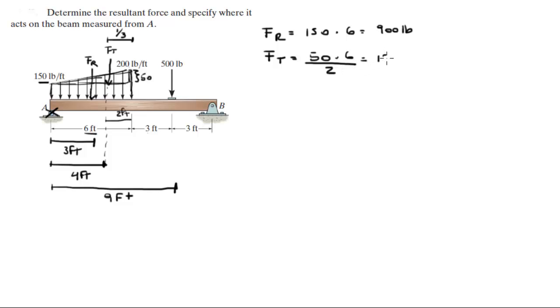So 50 times six is 300, divided by two is 150 pounds. Now we got the two forces, and this force is 500, so let's call it F3, equals to 500 pounds.